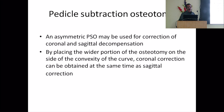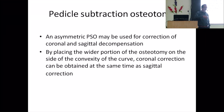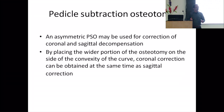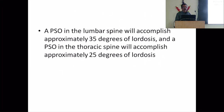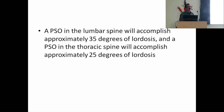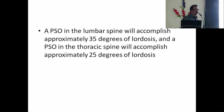The bone is removed using a drill or curettes, because this is cancellous bone. You use curettes to take out all the cancellous bone. Then you can break the lateral cortex with an osteotome or a drill, whatever you are comfortable with. This will give you about 35 degrees of lordosis in the lumbar spine and approximately 25 degrees of kyphosis correction in the thoracic spine.